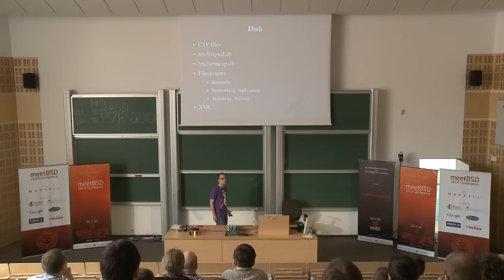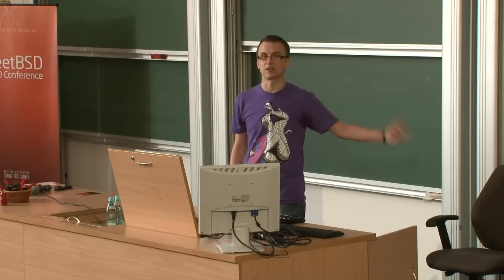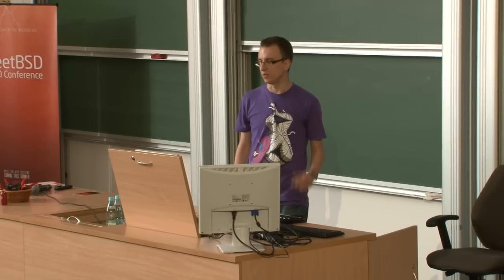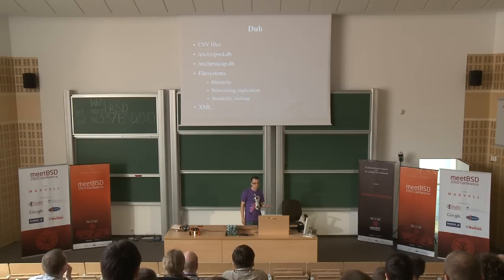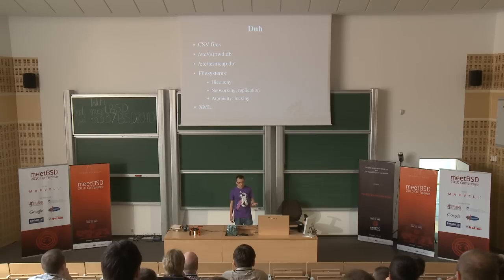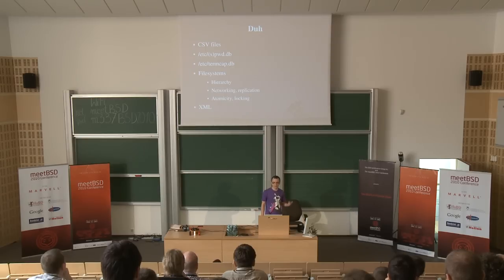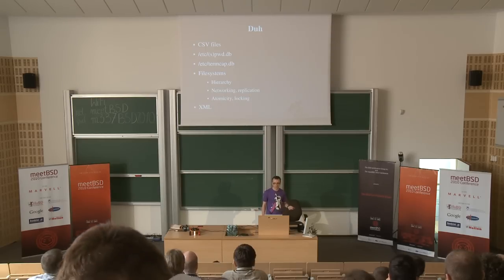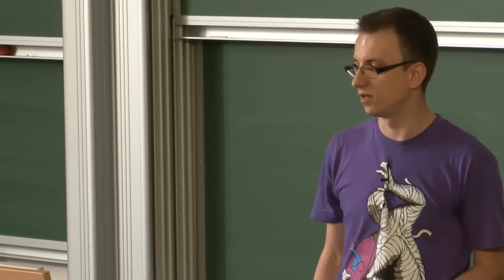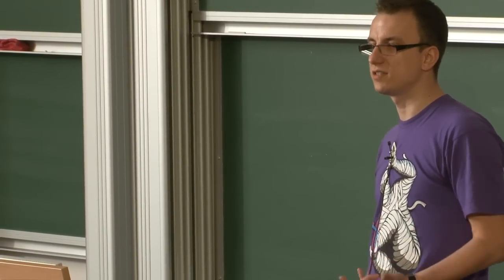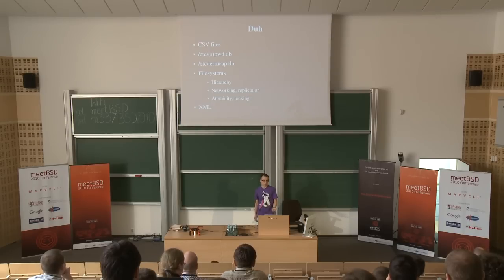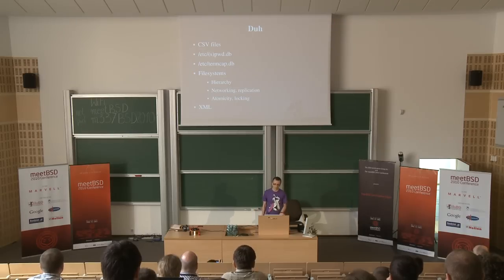We all know and like our CSV files, like the password file, like the group file. We have CSV files that are basically compiled to a database format, like the password DB. We have the termcap, which if you choose to compile it — capMKDB — is a Berkeley DB. And of course we have file systems, which are nothing else than a database. They are hierarchical, networked in the case of NFS. They have replication, like the Google file system. And they have other interesting properties like atomicity for file creation and various modes of locking, including range locking.